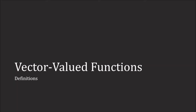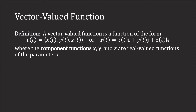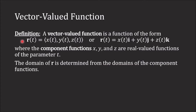We will now begin studying vector-valued functions. A vector-valued function is any function of the form r equal to the vector <x, y, z>. You can write it as a linear combination of i, j, k. The x, y, z are called the component functions, and they are simply real-valued functions of the parameter t. The domain of the vector-valued function r is determined from the domains of the component functions.